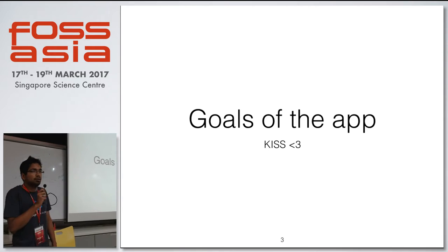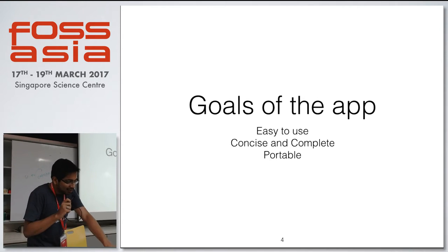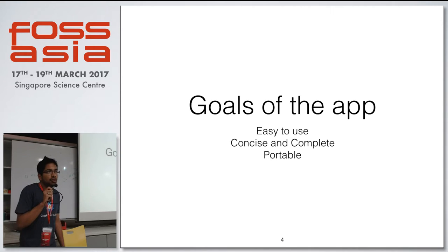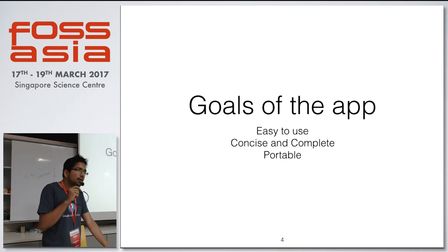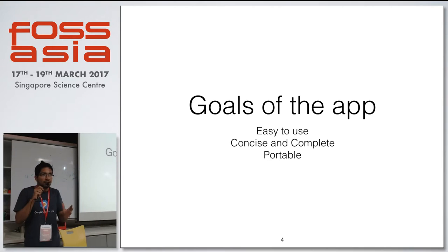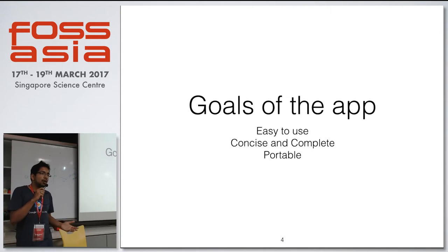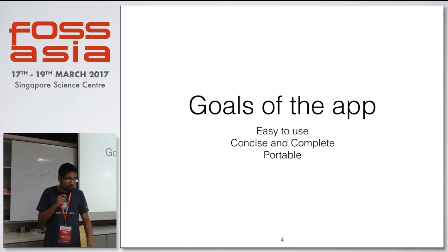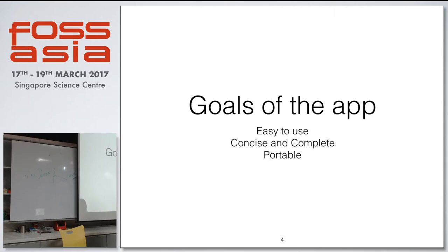So, goals of the app — what were the goals when we started building this? KISS: Keep It Simple Stupid. The app should be easy to use, easy to navigate. The UI and UX should be simple, clean, and minimalistic. It should be concise, complete, and portable. Nothing should be hard-coded in the app. The app is supposed to be a skeleton, so if we hard-code anything, that defeats the purpose. That's why you might not find it as polished as apps from Google I/O or Facebook's F8 — those are production-level apps. We want the app to be portable so that if you want to use our source code for your own event tomorrow, the app should represent your event only.